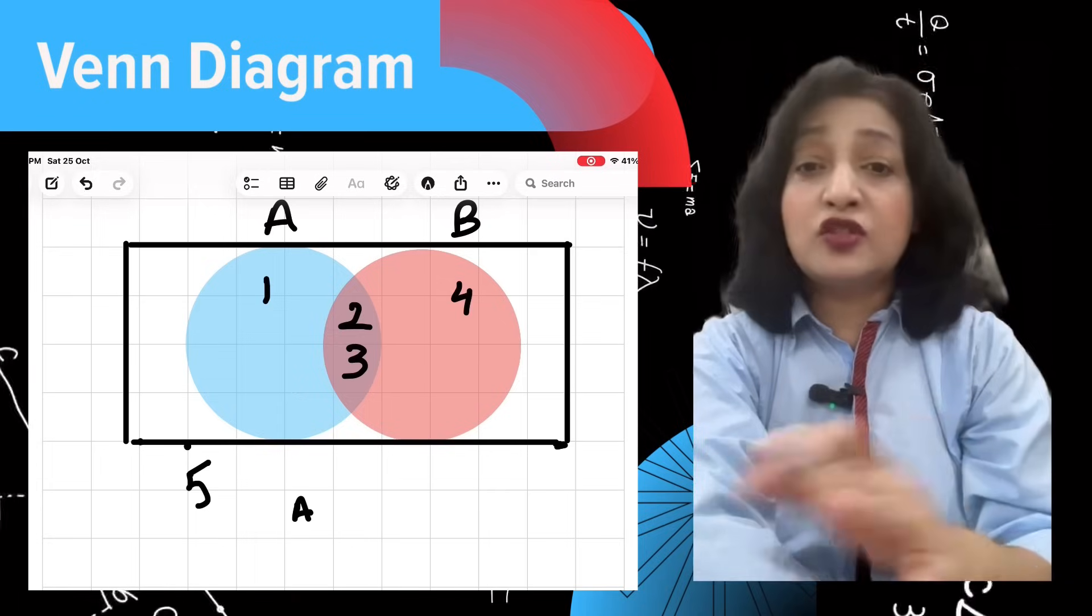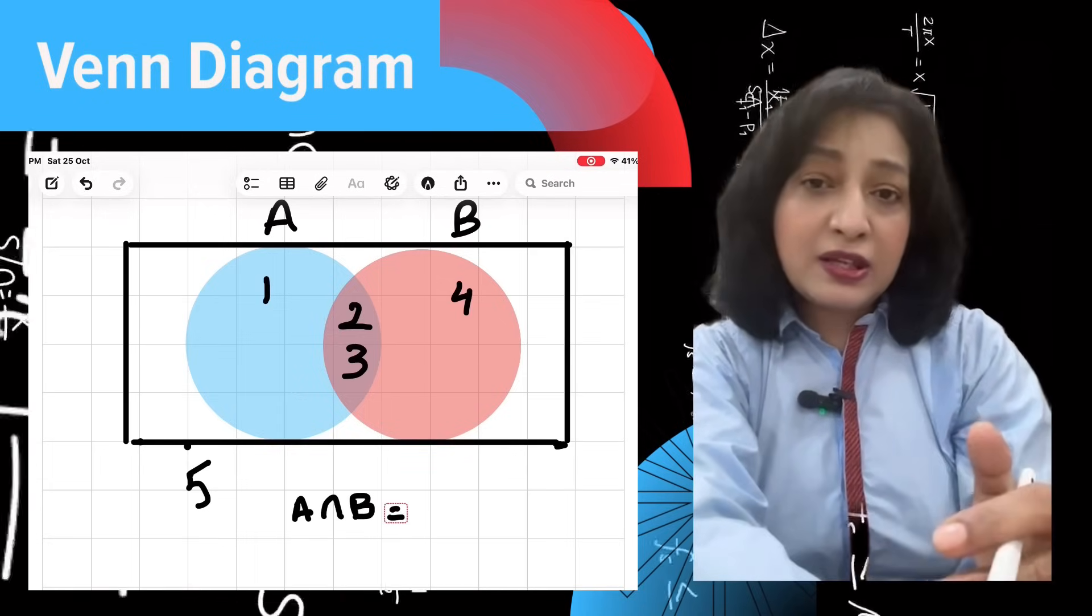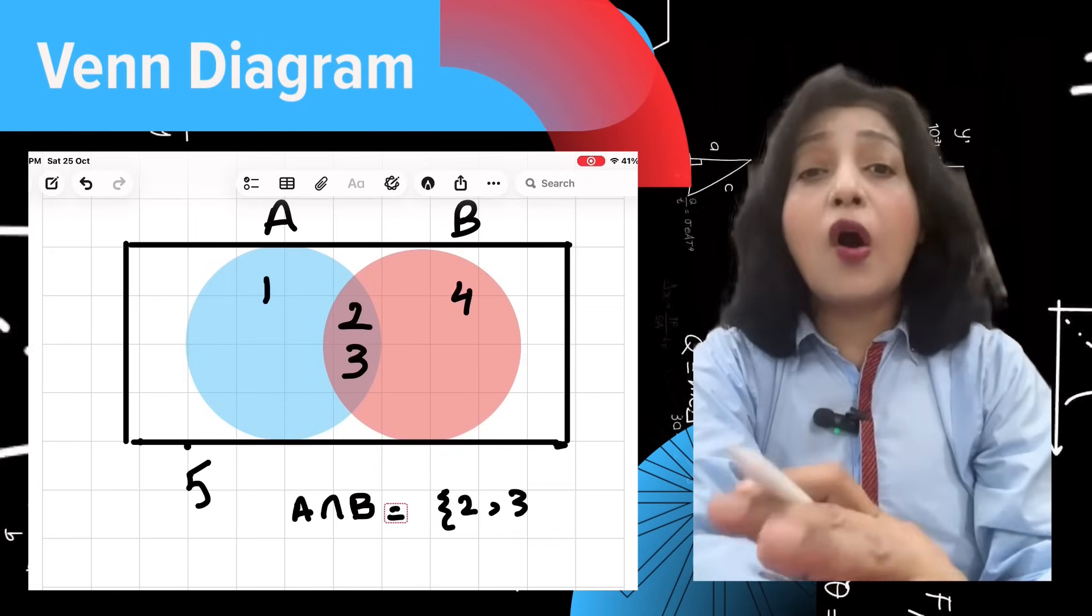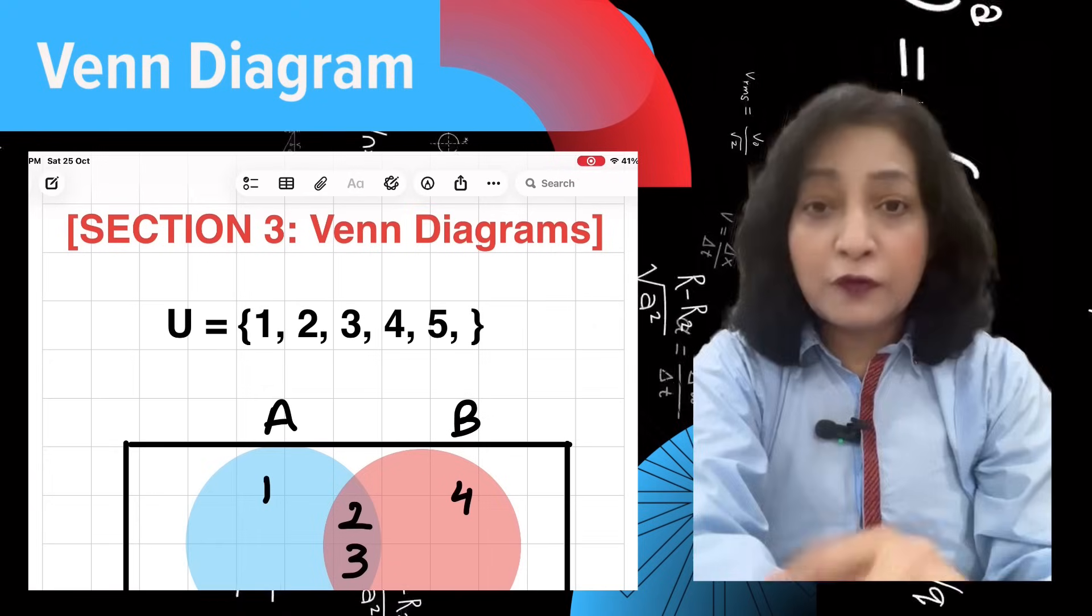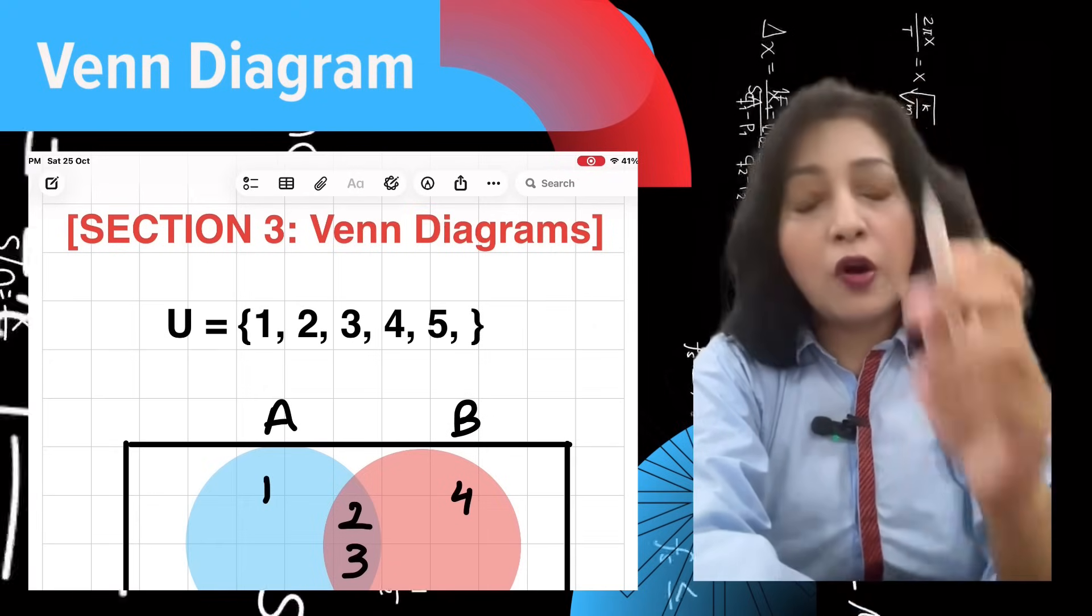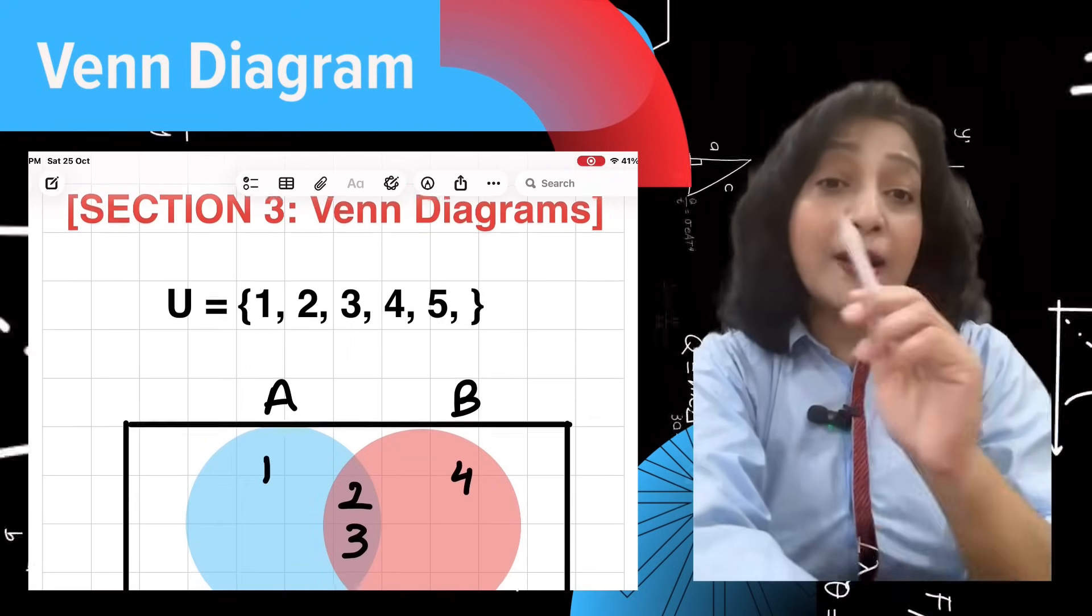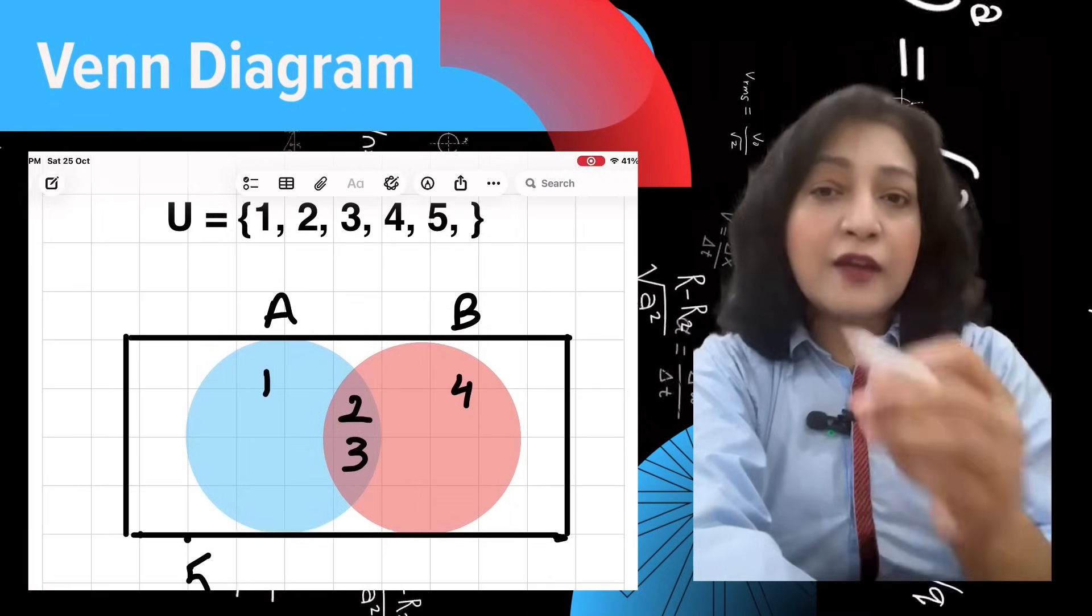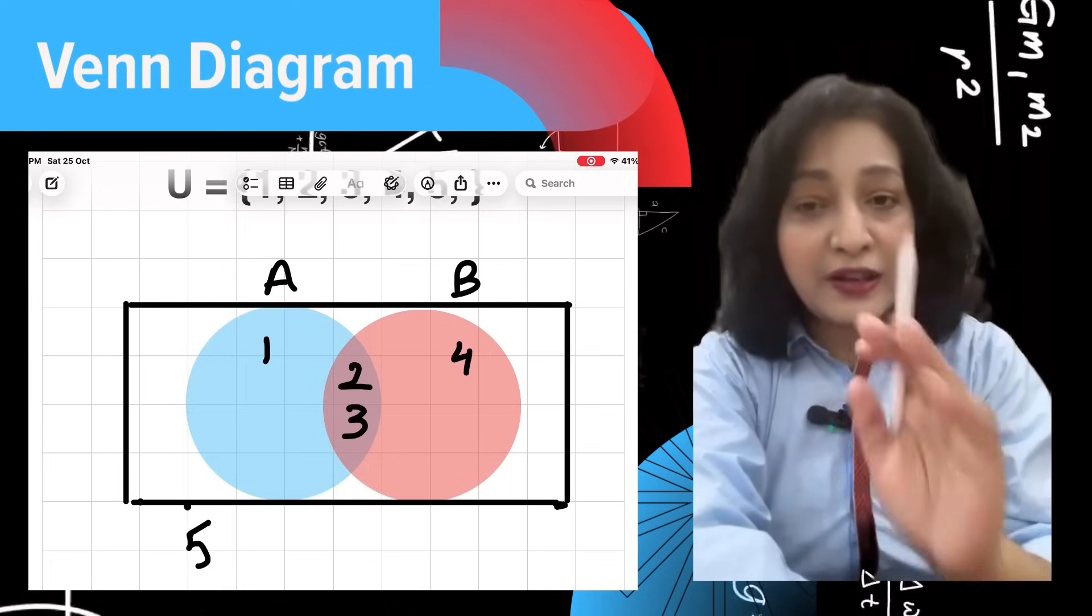Let's try some operations using the diagram. For A union B, shade both circles—we shade all of A and B, that is {1, 2, 3, 4}. For A intersection B, only shade the overlap. For A complement, shade outside A—we shade everything outside A, which is {4, 5}.